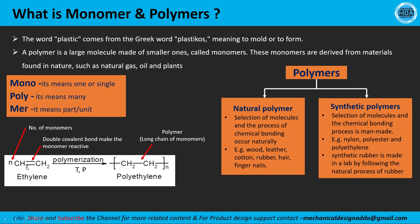Here we can see the chemical process where ethylene is the monomer. A number 'n' of ethylene monomers come together and form polyethylene, which is the polymer. So ethylene is the monomer and polyethylene is the polymer. In the polymerization process, the number of monomers are joined together to form polyethylene. We will discuss this process in detail in upcoming videos.